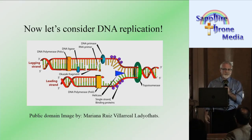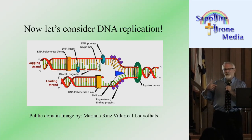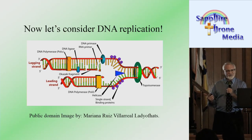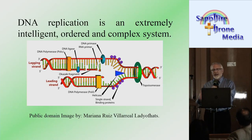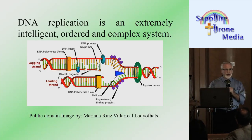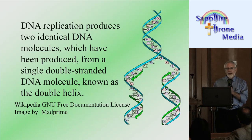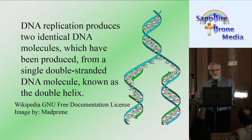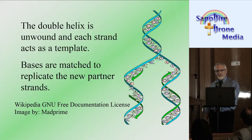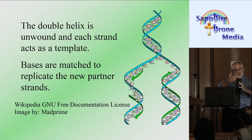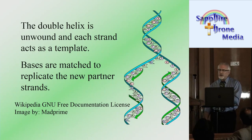God has designed something within our systems — hundreds, maybe thousands of things within our body that is so awesome. DNA replication is one of those things. DNA replication is an extremely intelligent and ordered complex system. DNA replication produces two identical DNA molecules from a single double-stranded DNA molecule known as the double helix. The double helix is unwound — untwisted — and each strand acts as a template. Bases are matched to replicate the new partner strand.